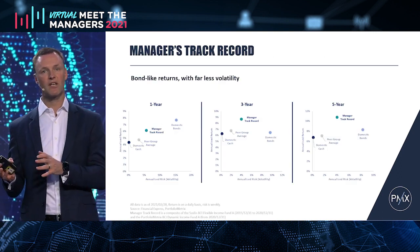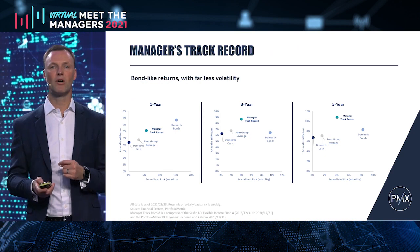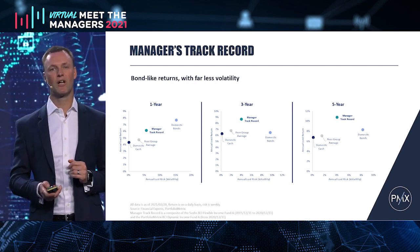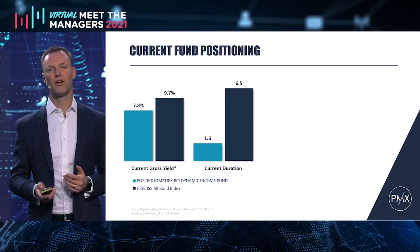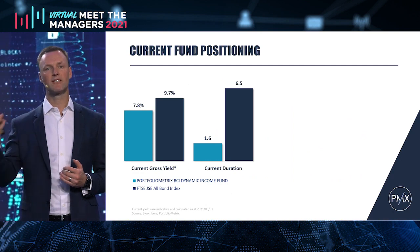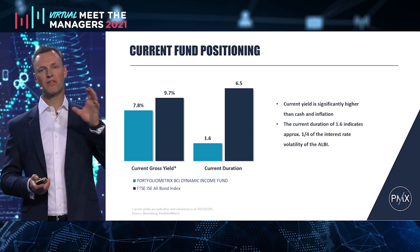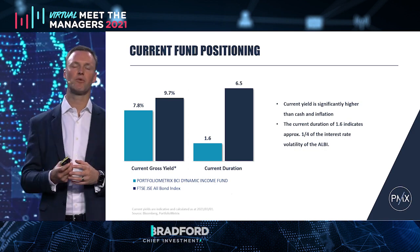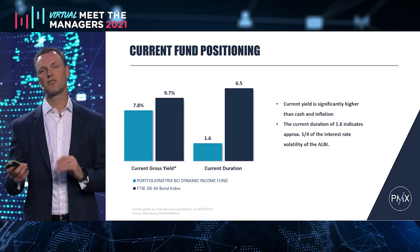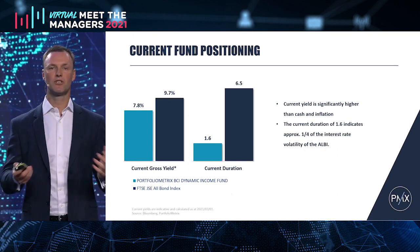We've been able to provide a very good return with much lower volatility than the All Bond Index over the last five years, three years, and even this last year to the end of February. This last 12 months doesn't look as good because bonds have recovered so well, and the bond market is currently going through quite a difficult period. We're sitting with a yield on the fund of just under 8% gross. The All Bond Index has a higher yield but a much higher duration. The yield on the fund right now is significantly higher than cash and inflation, but the duration — the interest rate sensitivity — is currently about a quarter of the All Bond Index, giving investors a very high yield without nearly as much volatility.